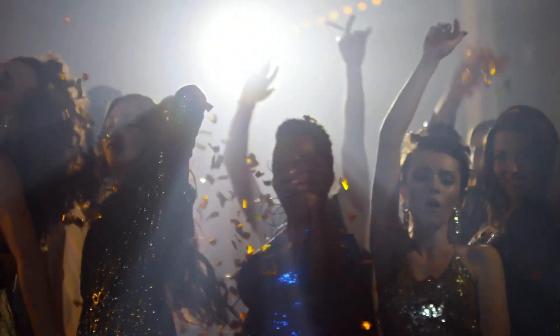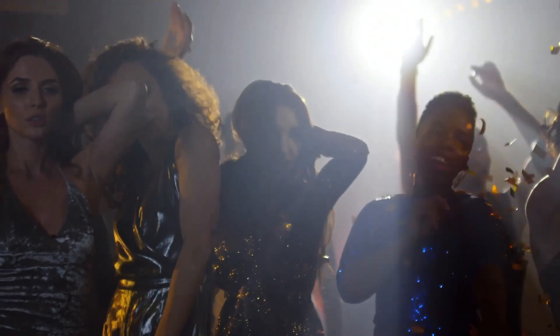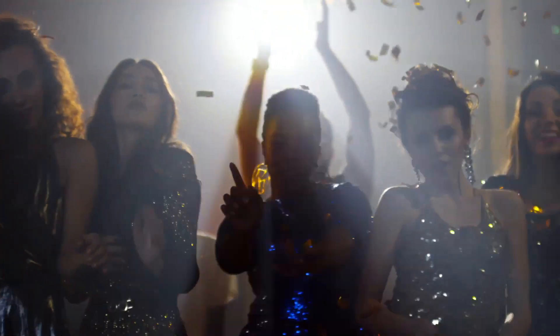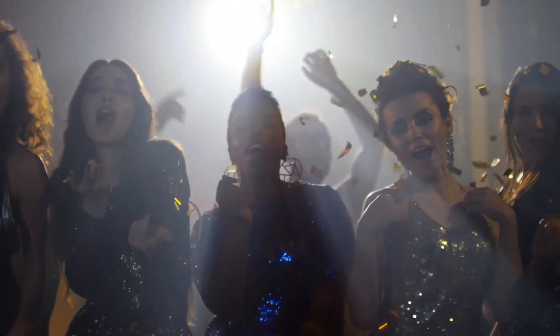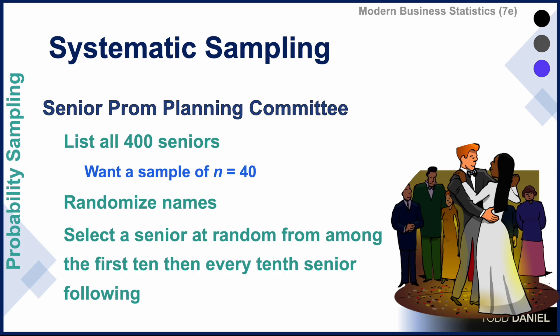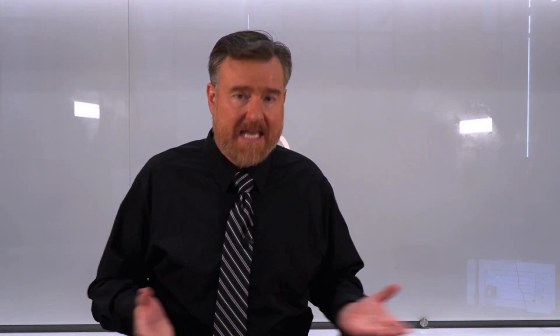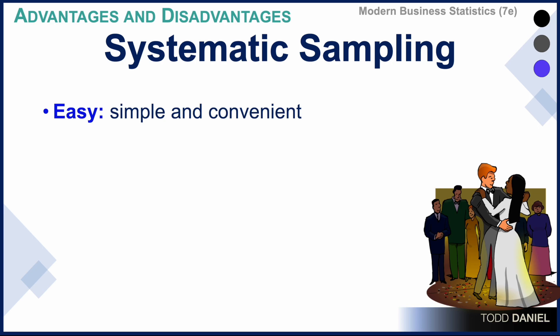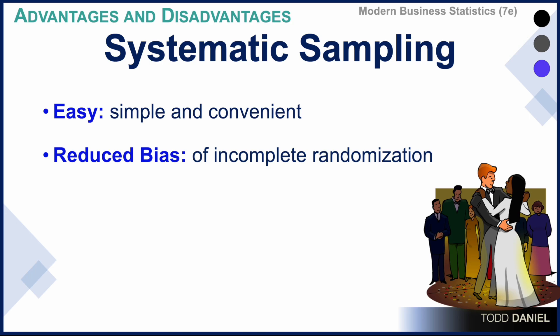Or imagine that we are part of the Senior Prom Planning Committee. We want to do a survey, but we don't have time to ask all 400 seniors, so we get a sample of 40. We randomize the names, select one senior at random from among the first 10, and then sample every 10th senior following. The advantage of systematic sampling is that it is easy, simple, convenient, and it reduces the bias of incomplete randomization that we would get with simple random sampling techniques.